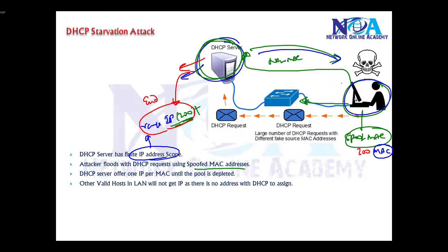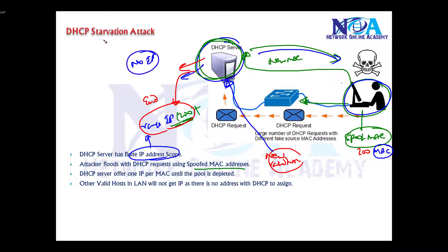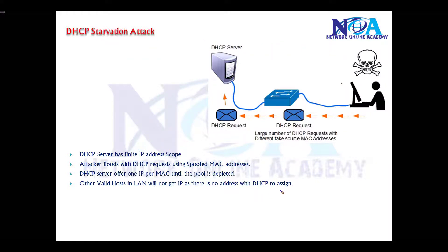All the IP addresses get assigned to these spoofed MACs and are bound. Whenever a valid host sends a request to the DHCP server, the server has no IP address left to assign. This is called a DHCP starvation attack — the valid host will not be able to get an IP address because there are no addresses remaining.